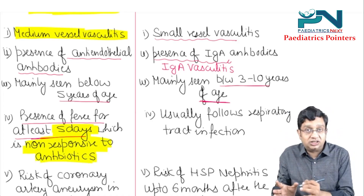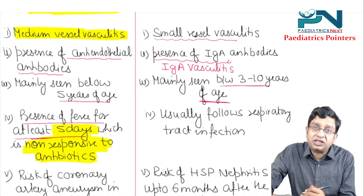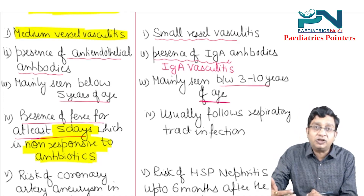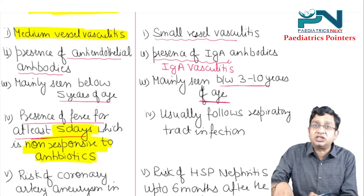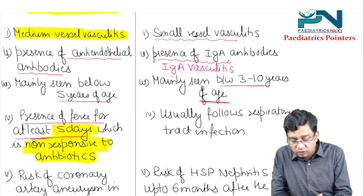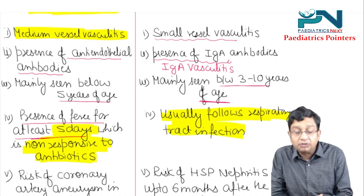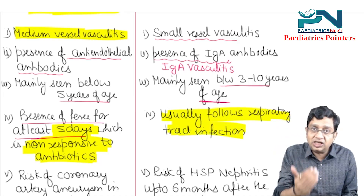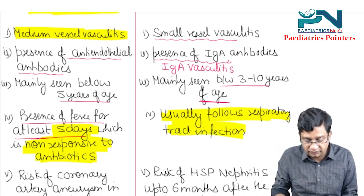HSP usually follows respiratory tract infection. If there was fever, it is not at the time of presentation — fever might be before. HSP follows respiratory tract infection because during infection, the IgA level increases and is deposited in the small vessels.